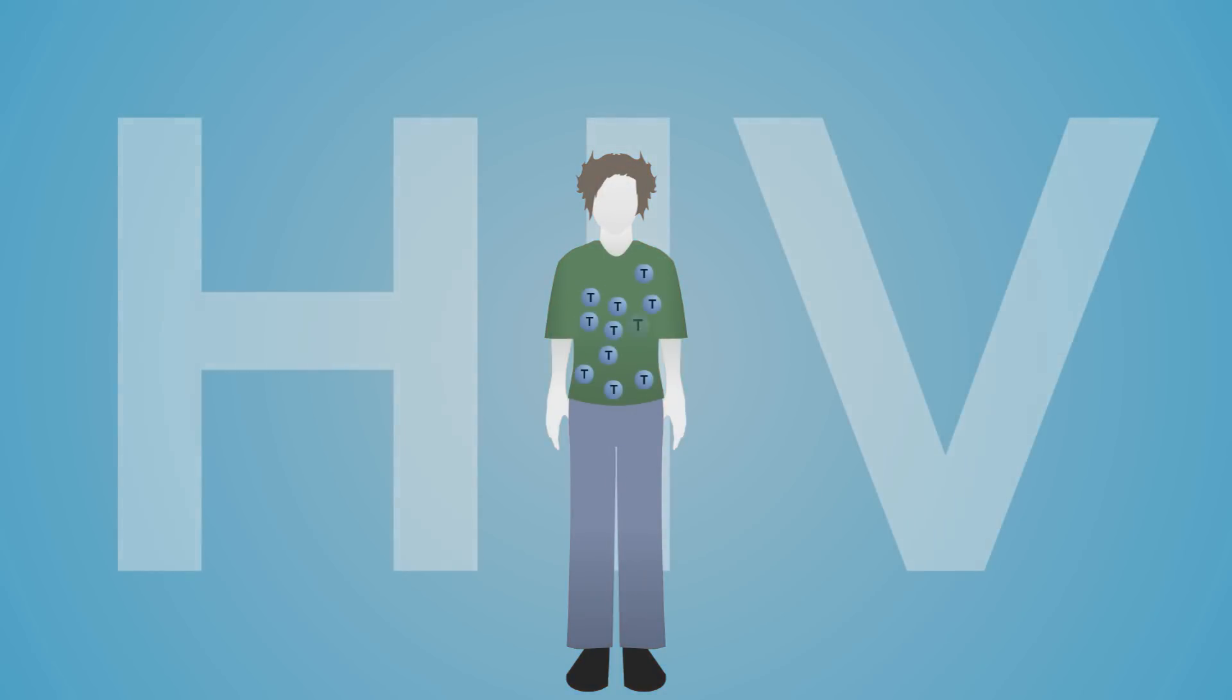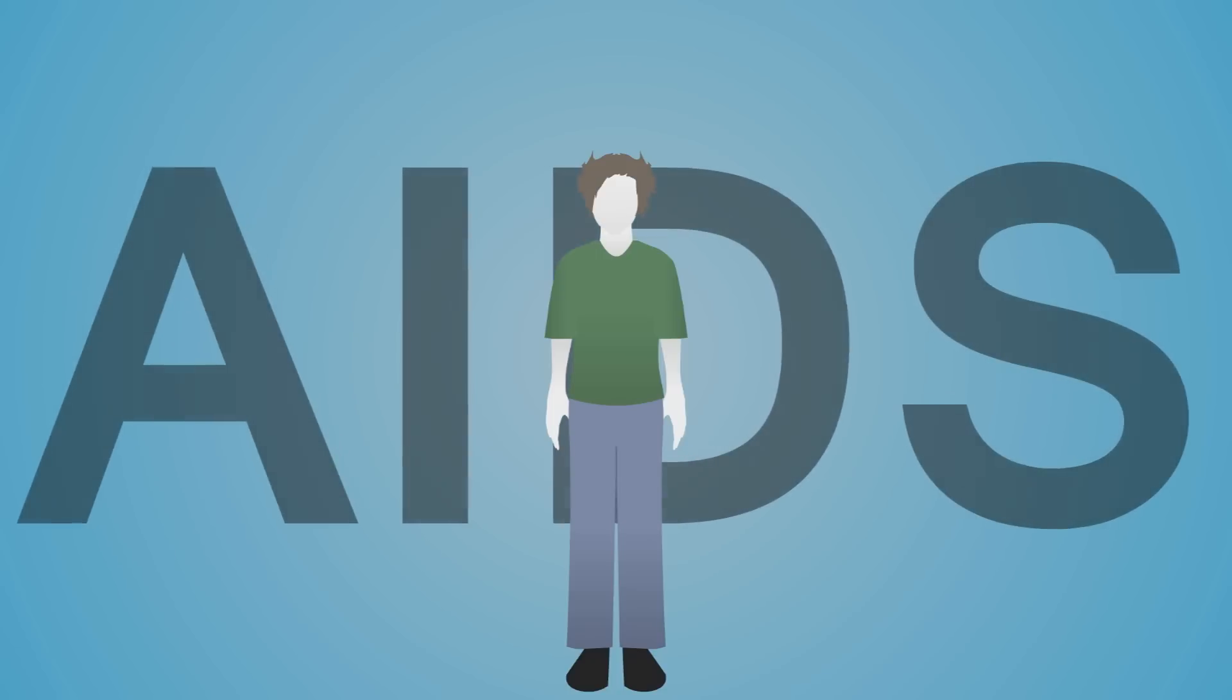Once the HIV virus kills enough of your T cells to impair your immune system's normal function, you're considered to have AIDS.